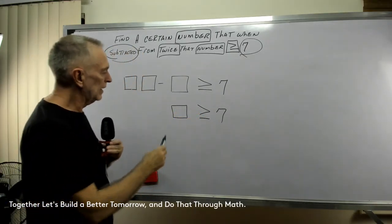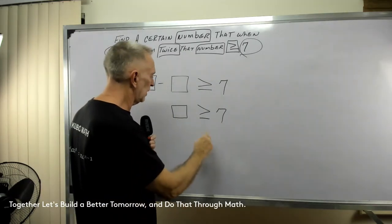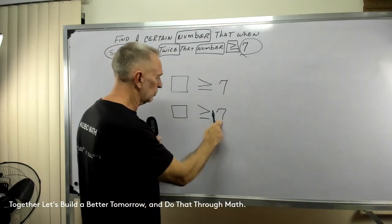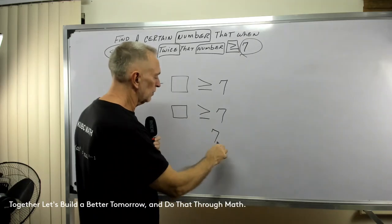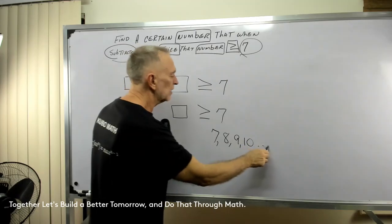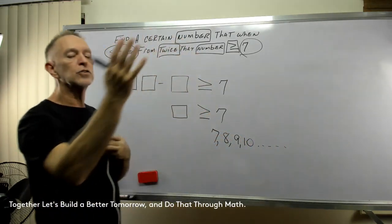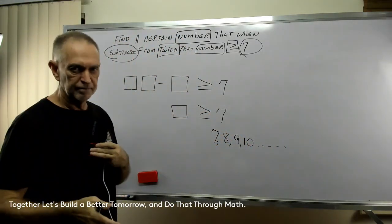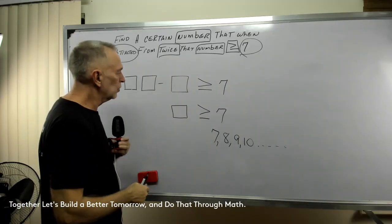So, what does that mean? This could equal 7 if it's equal to 7. If it's greater than 7, it could be 8. It could be 9. It could be 10. It could go up to the highest number you can imagine. And that would solve the equation.